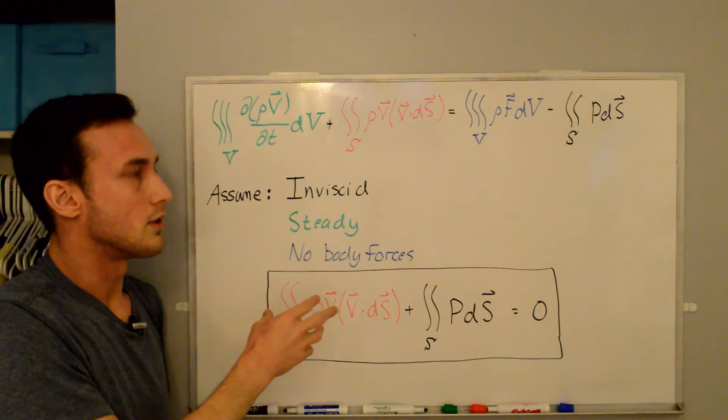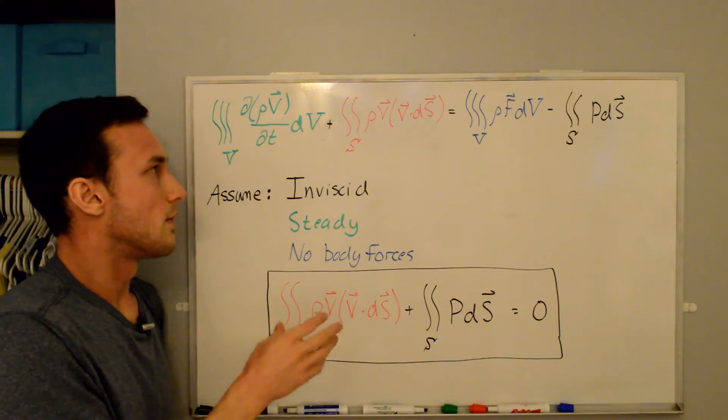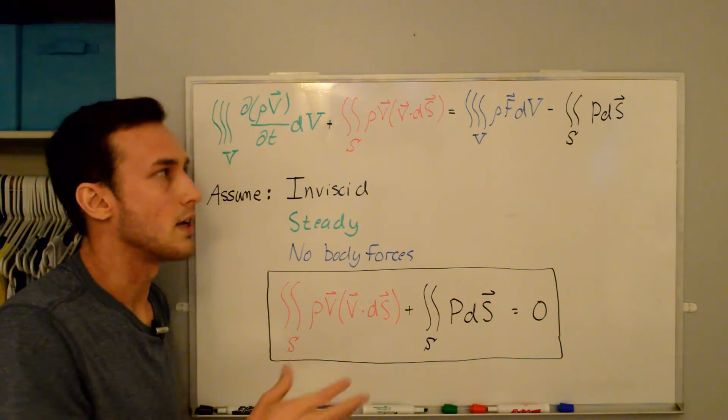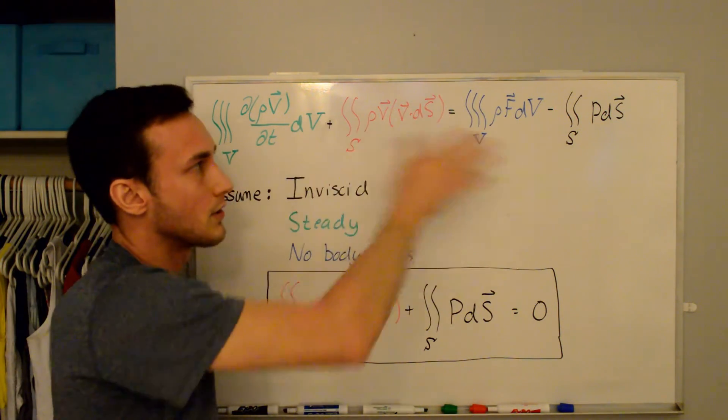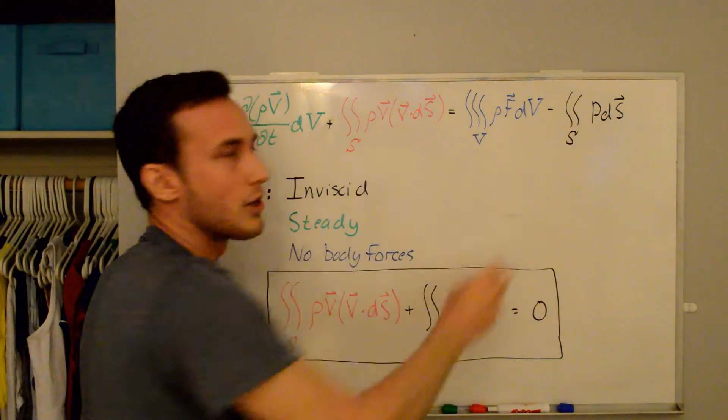So we're going to make some assumptions to simplify this down so that we can get this 1D, nice 1D derivation. The first is that we're talking about inviscid flow, there's no viscous effects, and you'll note that I don't even have the viscous term in here. Usually it would show up over here with the pressure term.